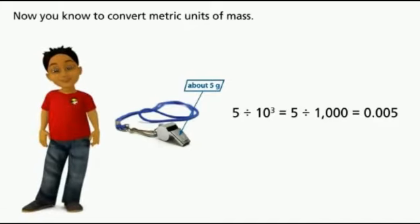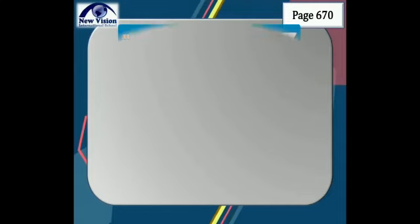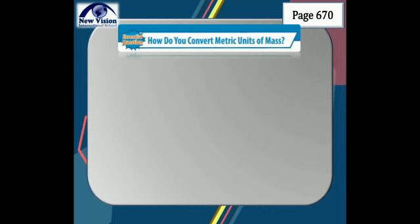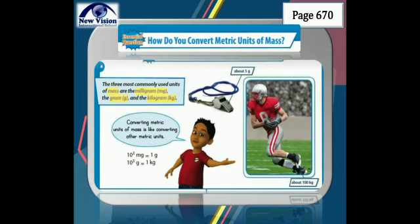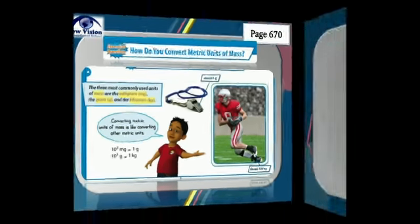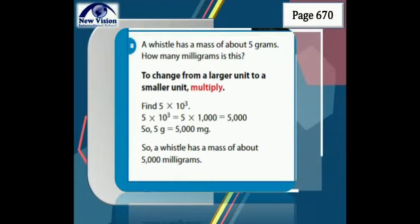Now you know how to convert metric units of mass. Let us review the essential question: how do you convert metric units of mass? The three most commonly used units are the milligram, gram, and kilogram. To change from a larger unit to a smaller unit, we multiply. For example, converting 5 grams to milligrams: 5 times 1,000 equals 5,000. So 5 grams equals 5,000 milligrams.